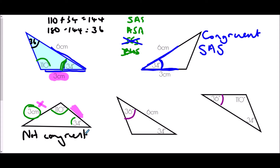The next triangle has a 36-degree angle, a 34-degree angle, and a six-centimeter side. The blue triangle also has 36 and 34 degrees, with the six-centimeter side between them. Checking the comparison triangle — the six-centimeter side is also between the 36- and 34-degree angles. So yes, we have congruence here, proven by Angle Side Angle.